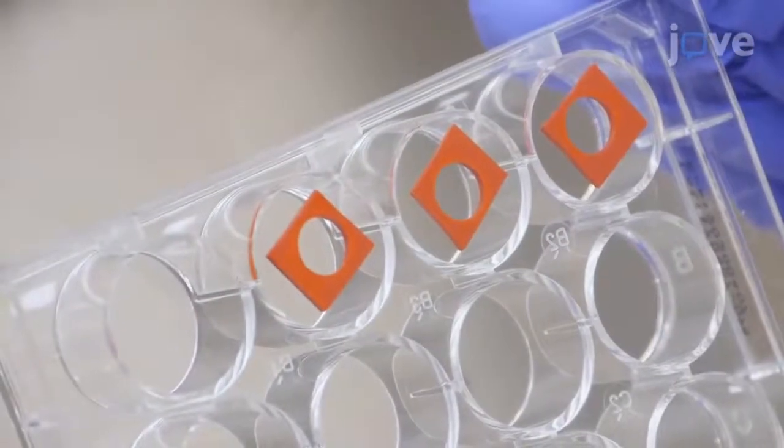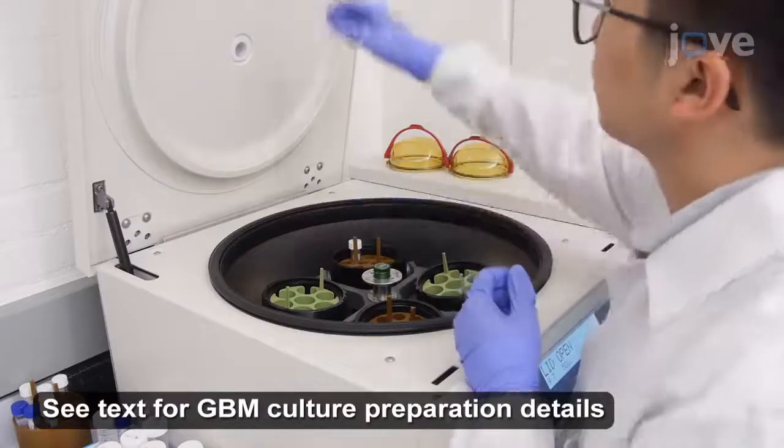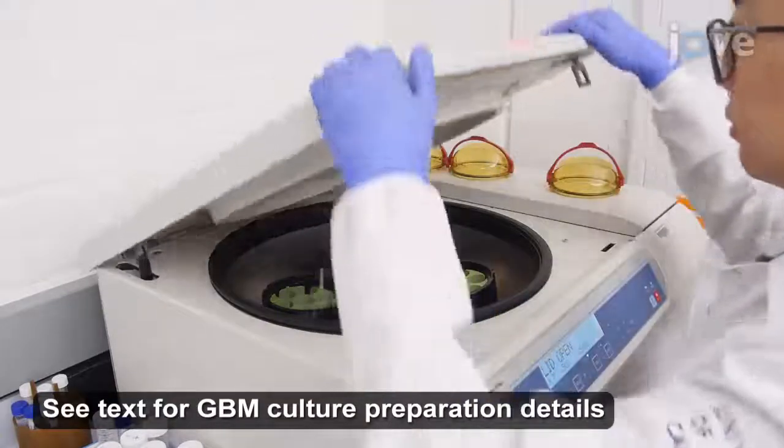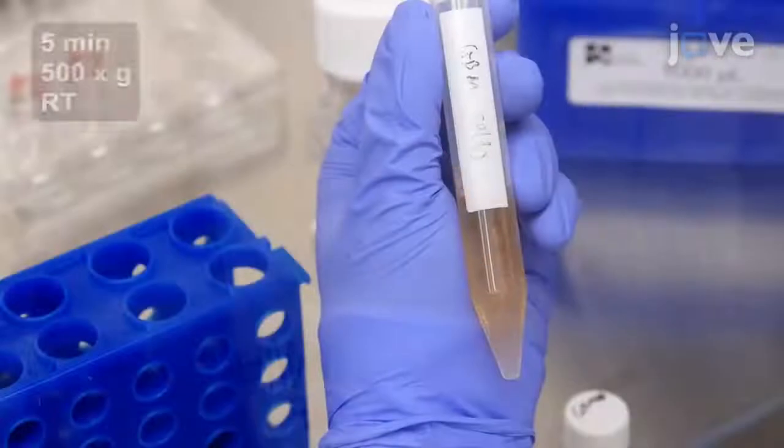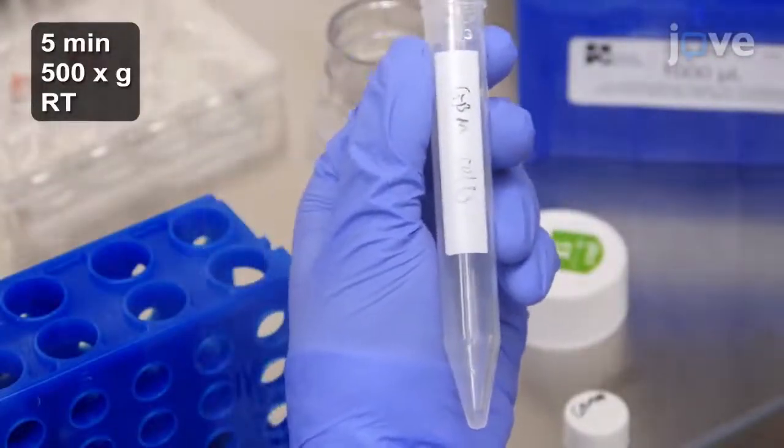After checking the seal between the molds and the well bottoms, collect the dissociated gliomaspheres from a glioblastoma cell culture by centrifugation and re-suspend the pellet in 1 milliliter of cell dissociation enzyme.